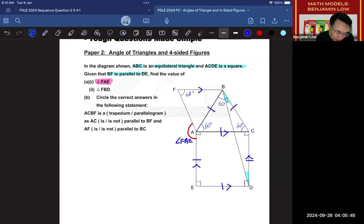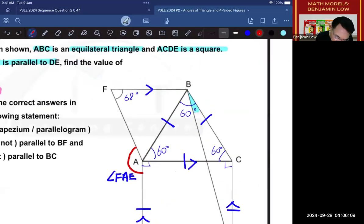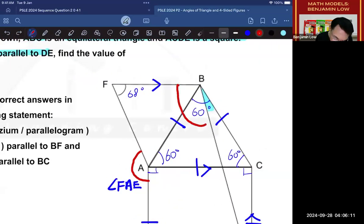And the other one that they are asking us to find is BFD. So BFD is B, F, and D. Sorry, FBD. F, B, D. My bad. So FBD is over here, and this is the angle they are asking us to find as the other angle. So this is angle F, B, D.